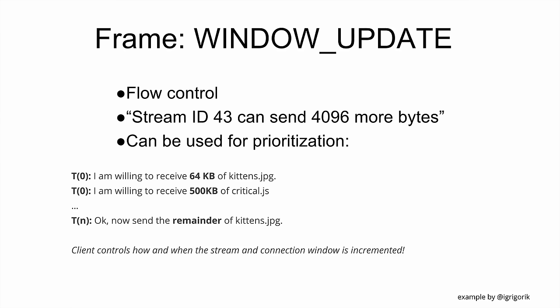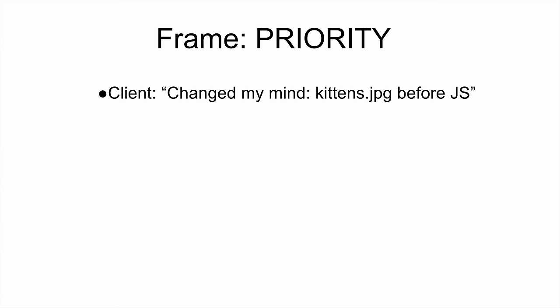Window Update is how you give the peer more flow control tokens. Everything in HTTP2 is flow controlled, so you cannot send data unless you've gotten permission from the other side. Priority lets browsers tell the server the relative order that it wants requests in. This part is optional.